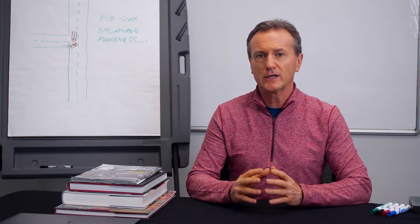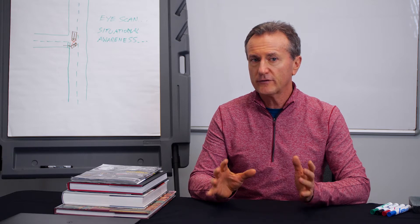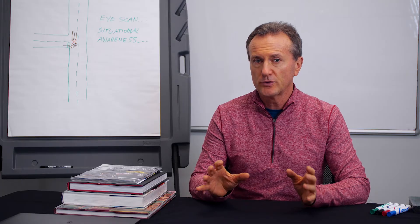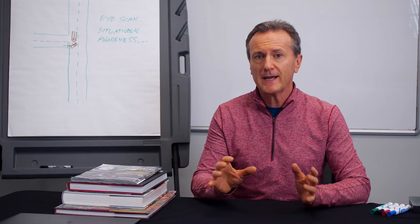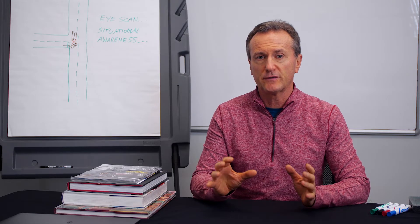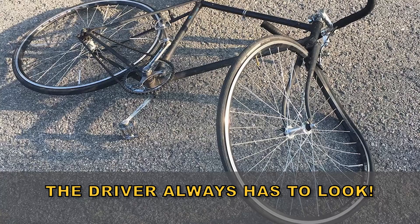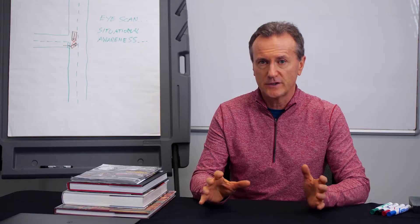A rear vision or backup camera provides an image on a vehicle infotainment system display. In a small number of vehicles, you may see the backup camera display within the rearview mirror. A backup camera view is a fixed view — it cannot see cross traffic or anything underneath the bumper or outside its limited vision.